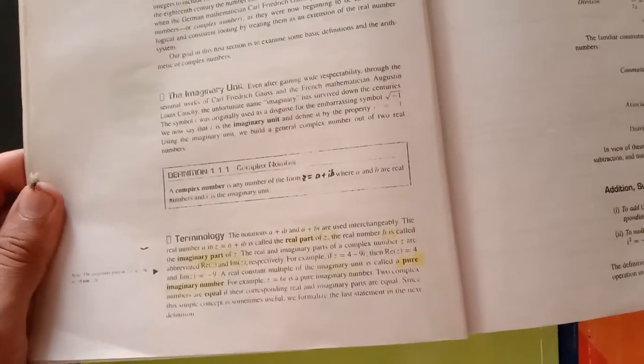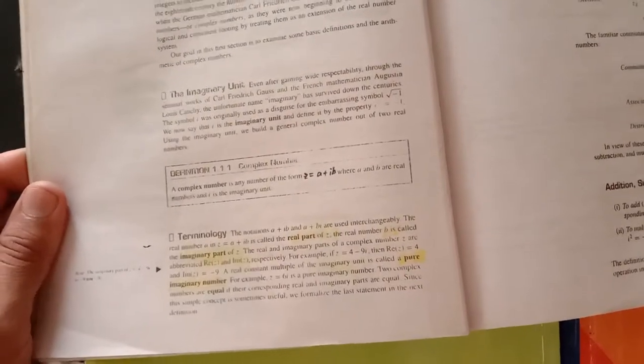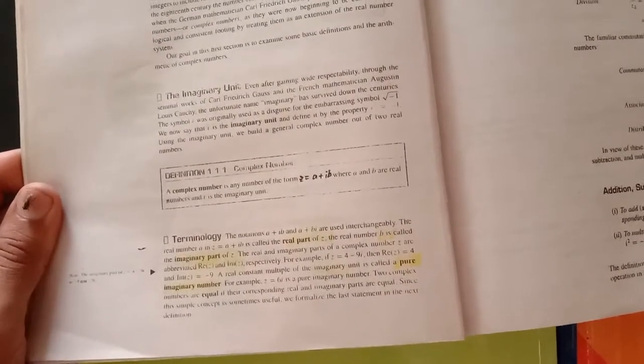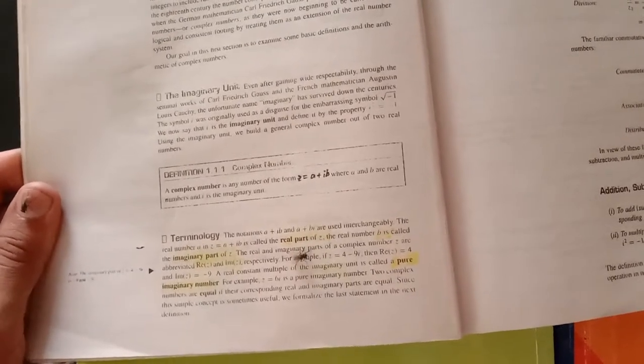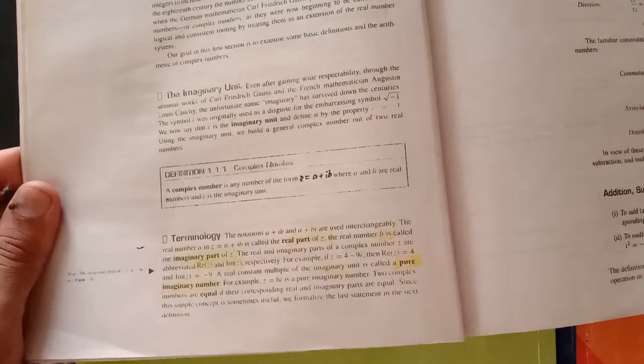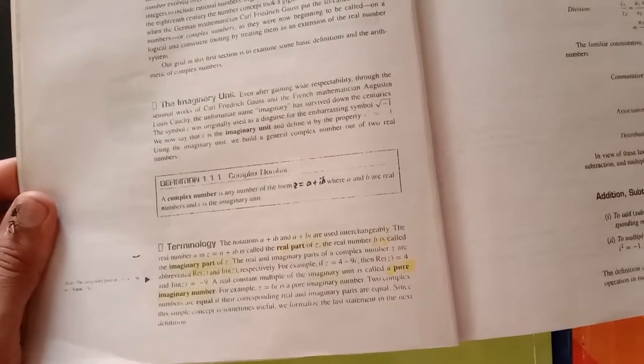Is mein do parts hai. Ek hai A aur ek hai B. A shows the real part of the complex number and B shows the imaginary part of the complex number.